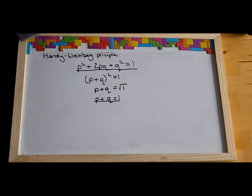Some of the assumptions made when using the Hardy-Weinberg Principle are that it's a large population, mating is random, there's no selective advantage for having the different phenotypes, there are no mutations, no migrations, and no genetic drift.